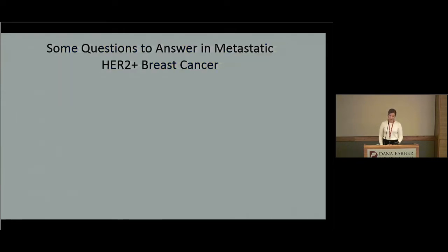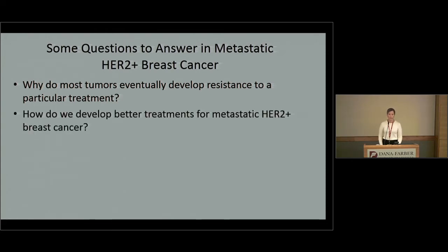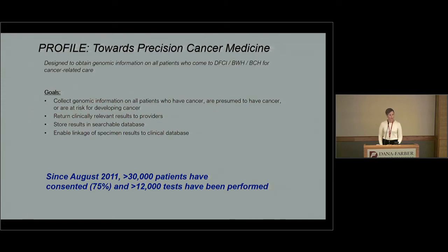We have effective therapies, but they're certainly not perfect and we need to do better. Questions we're trying to answer: why do most tumors eventually develop resistance to a particular treatment? How do we develop better treatments for metastatic HER2-positive breast cancer? Those two questions are probably related — we need to understand the first to get to the second. And how can we better treat brain metastases? The tools we have are fairly limited and we need to do better. These are some of the ways we're working on this at Dana-Farber.